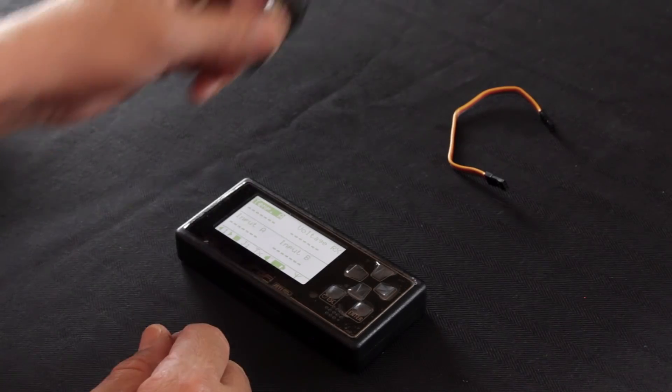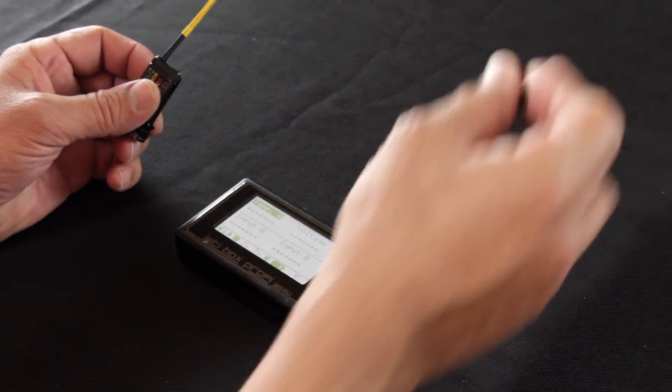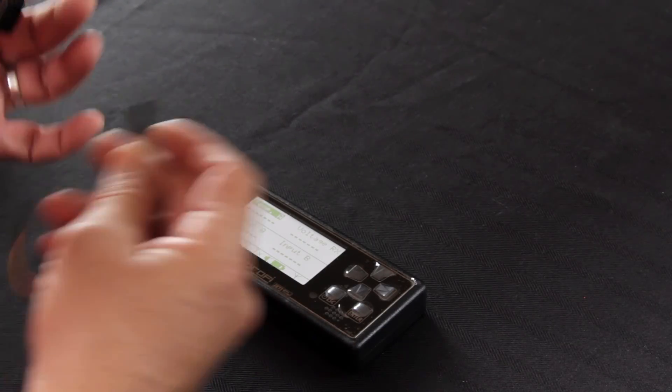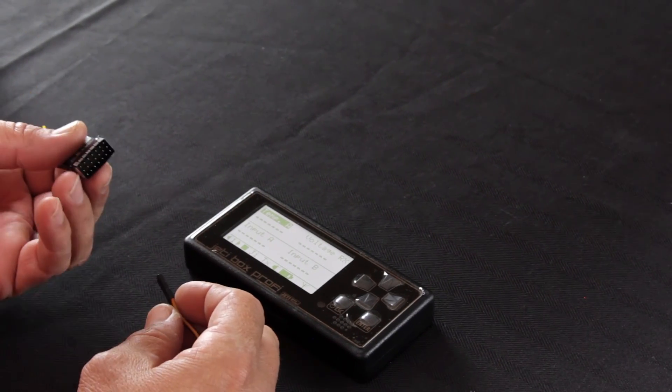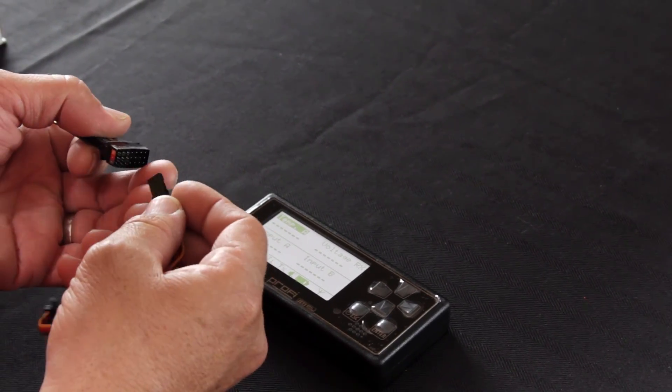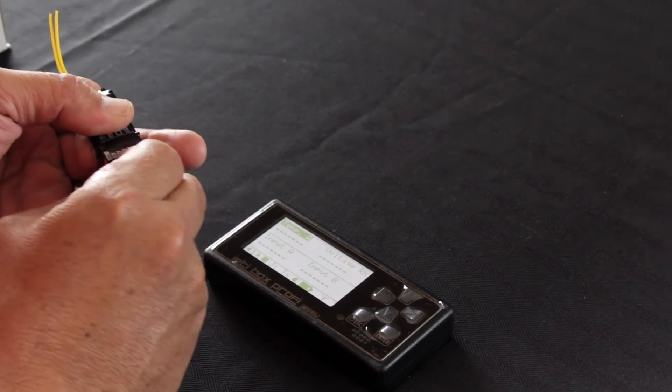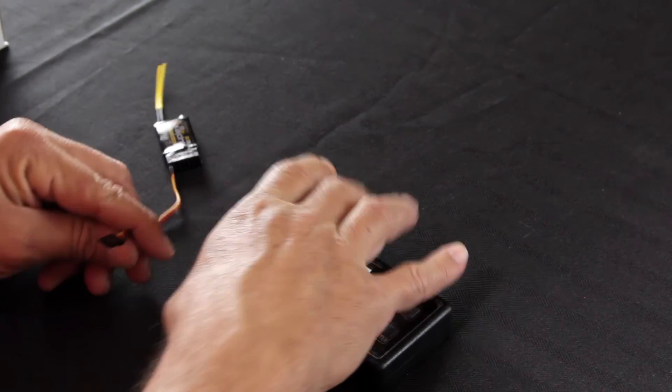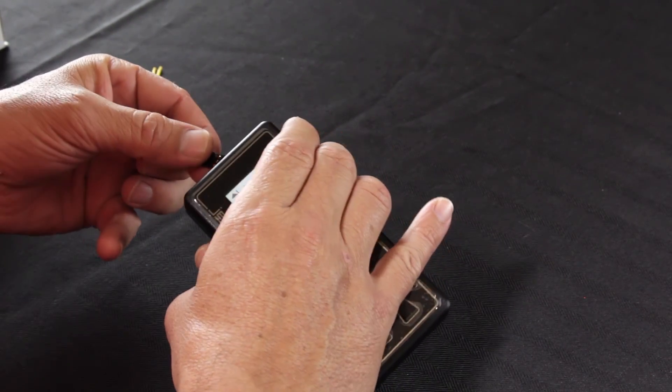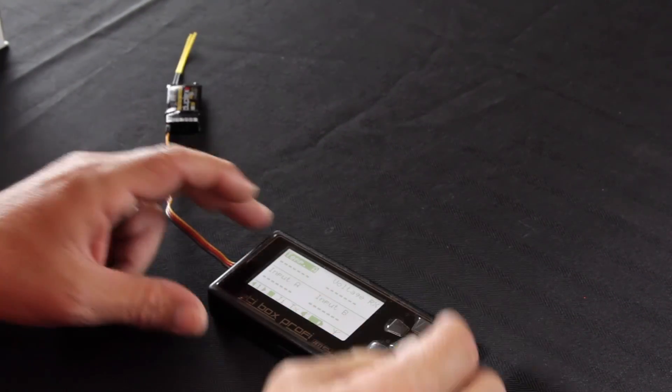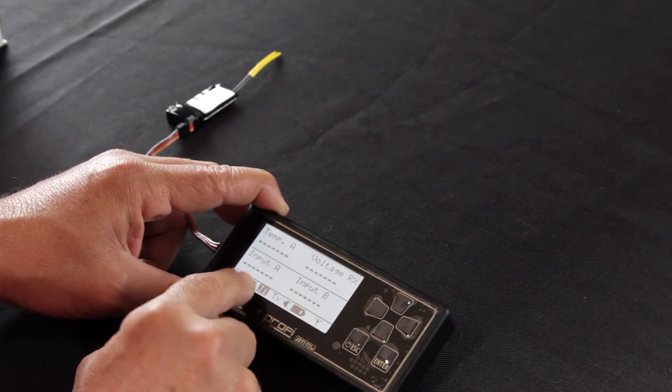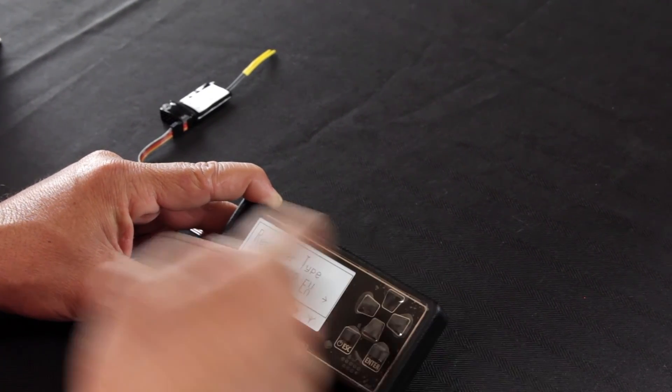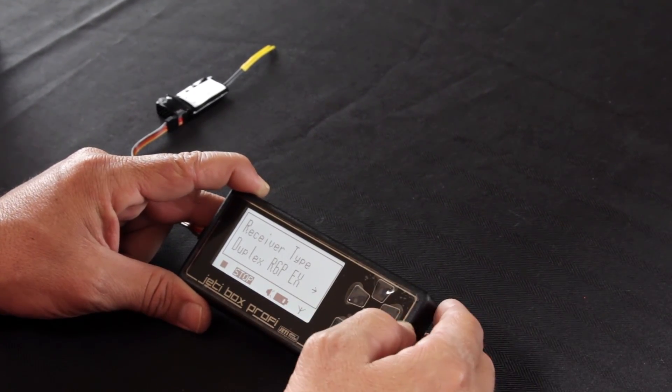Next thing you'll need to do is set up your receiver. Unless you've already set your receiver up in telemetry mode, it'll be in standard mode. So what you're going to need to do is connect your male to male servo connector between your receiver and your Profibox US. Scroll down to JI at the bottom of the screen and hit Enter. That'll take you into the receiver programming.